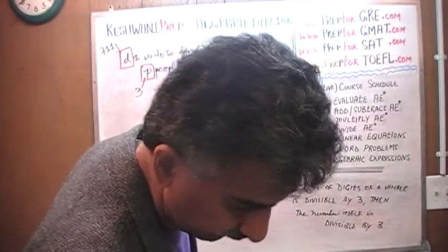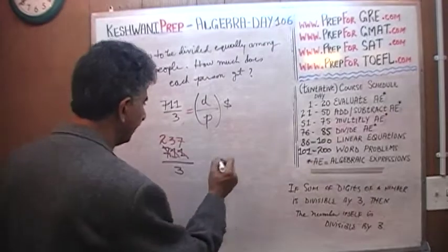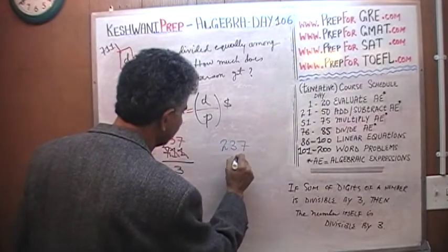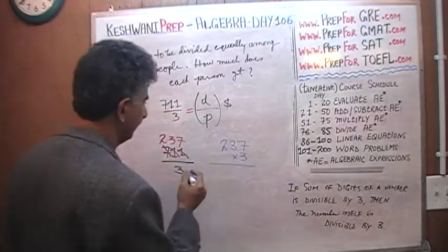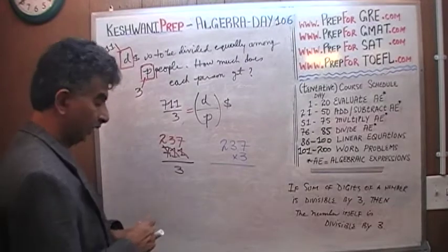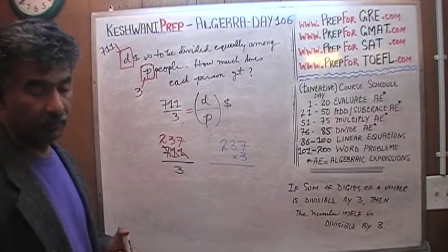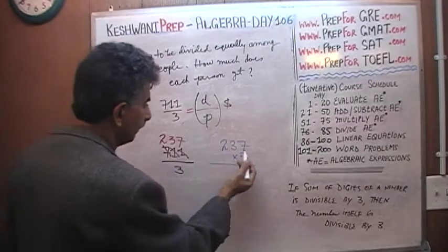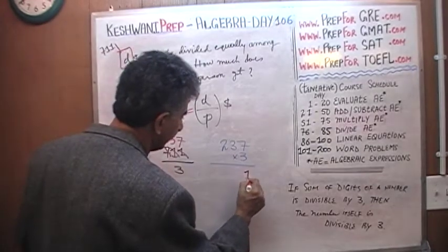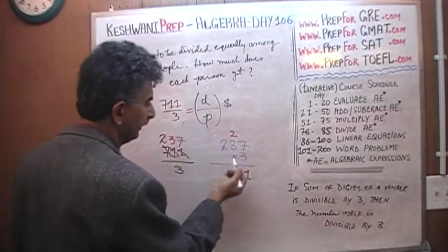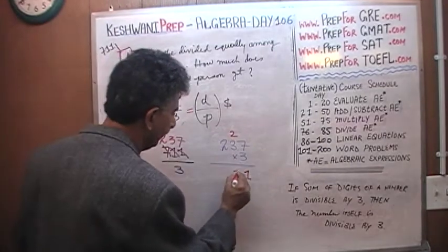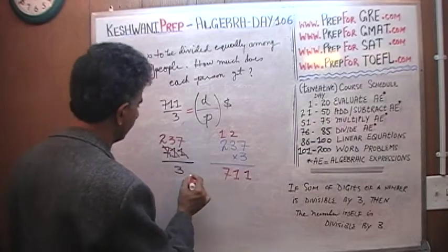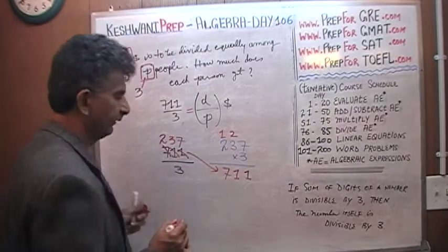And we can quickly verify that. We can very quickly verify our answer by multiplying 237 times 3. See what it gives us. It better give us 711, otherwise we are in trouble. 7 times 3 is 21. That's 1, carry 2. 3 threes are 9, plus 2 is 11. 1, carry 1. 2 threes are 6. Voila. What do you know? We get our 711 back.